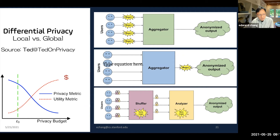Differential privacy is kind of dying out because it's very hard to prove to an auditor — you can show your epsilon and sigma values and claim in theory it works, but you cannot prove everything was done empirically. And even if you show empirical data, who can trust it?